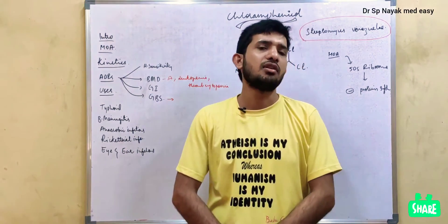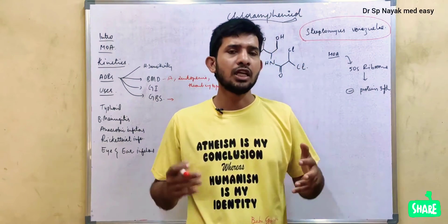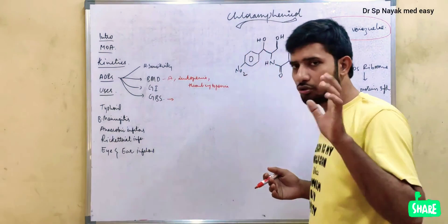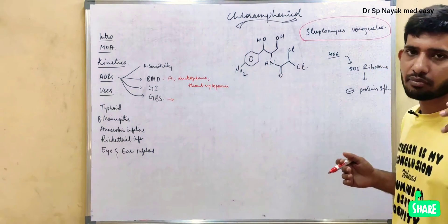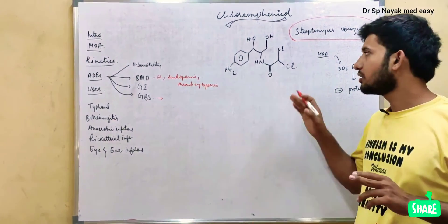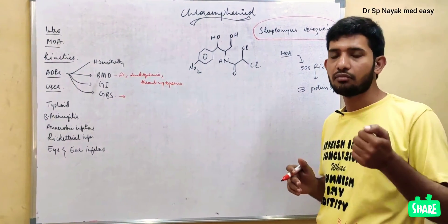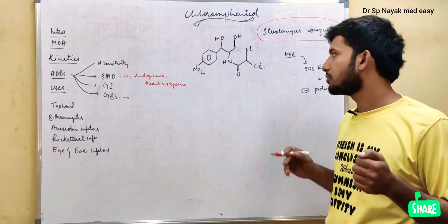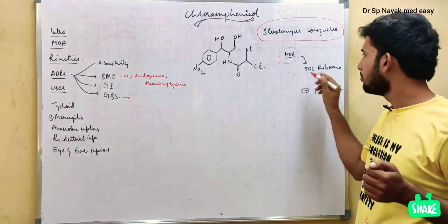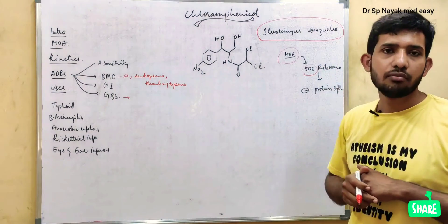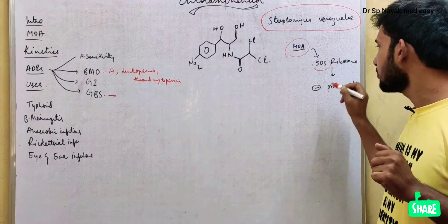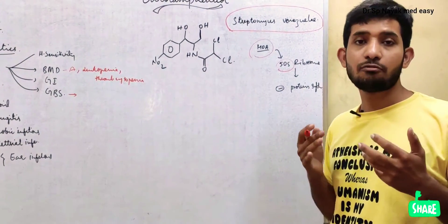Let's see about the mechanism of chloramphenicol. Its mechanism is the same as tetracyclines — if you want to know about tetracyclines, I have provided a link in the description. Chloramphenicol usually binds the 50S ribosome of the susceptible bacteria, and by binding this 50S ribosome, it inhibits the synthesis of protein.